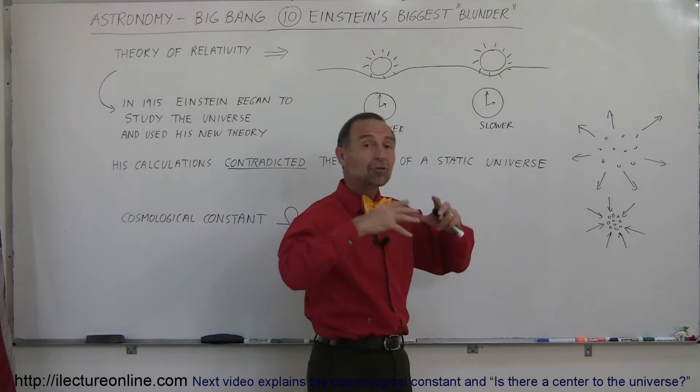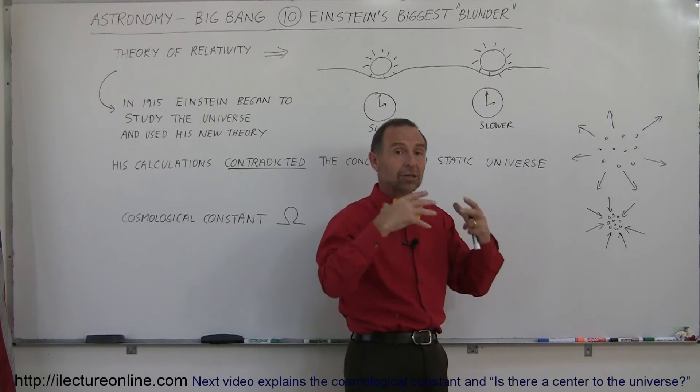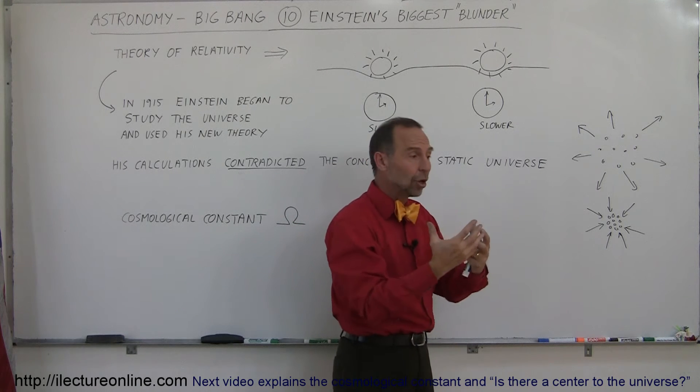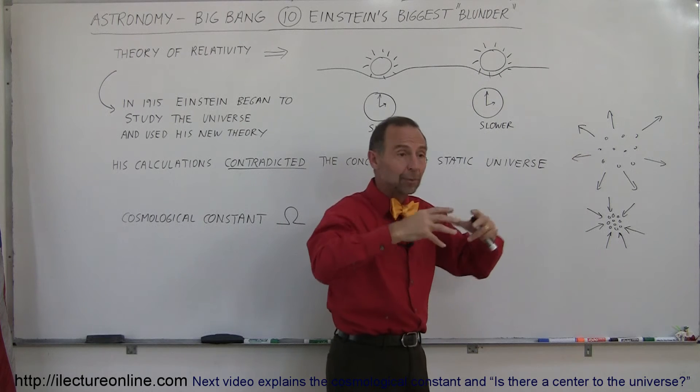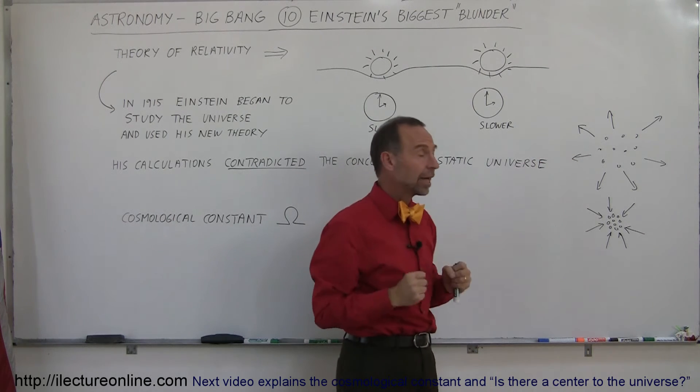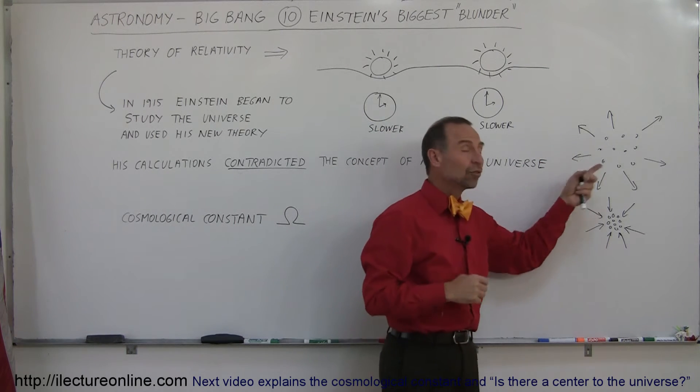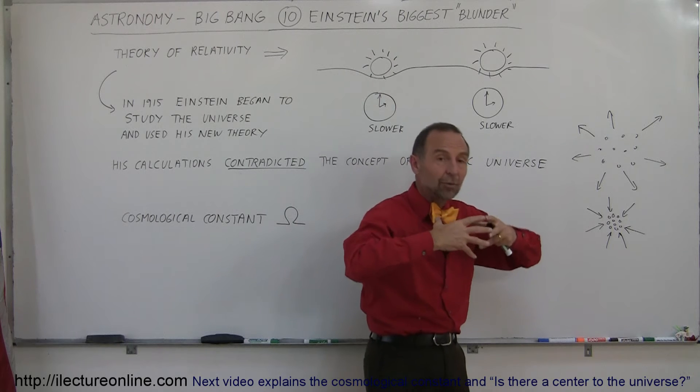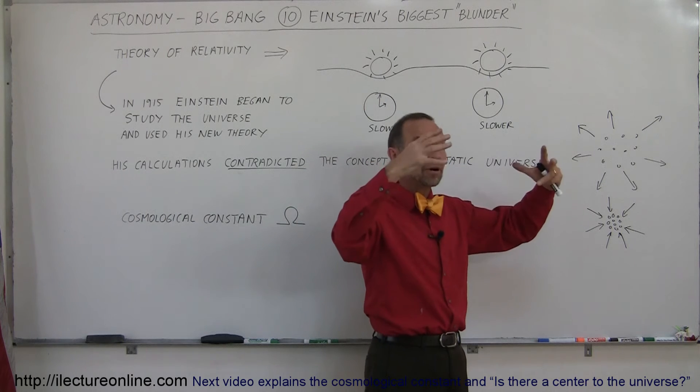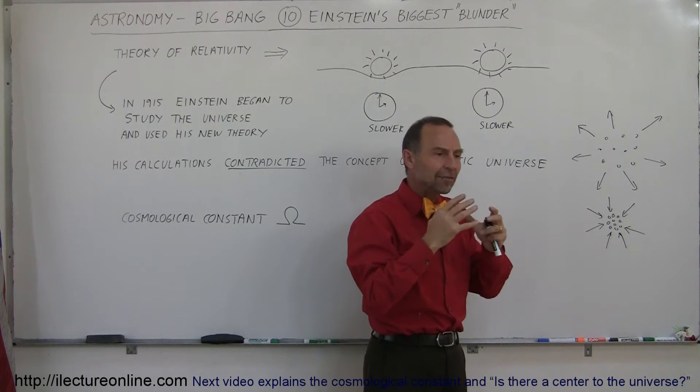Depending upon how much mass was in the universe, if there was a certain amount of critical mass or beyond the critical mass, the universe would eventually collapse because the gravity would pull everything close together. And if there was not enough gravity and space was expanding and things were flying apart from one another, if there was not enough gravity there, the expansion would just continue.